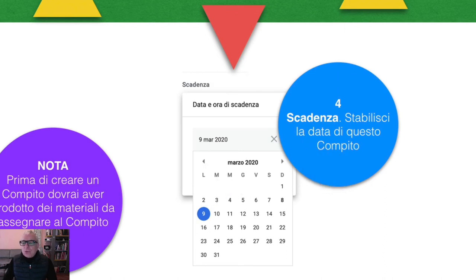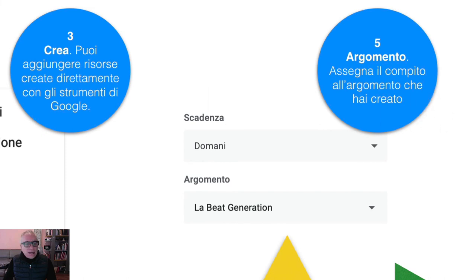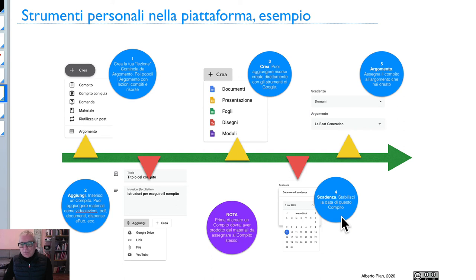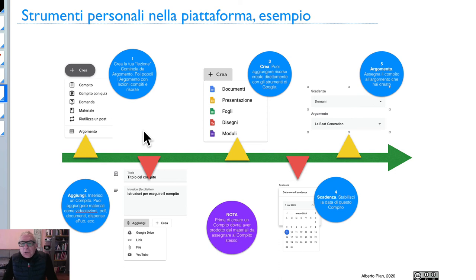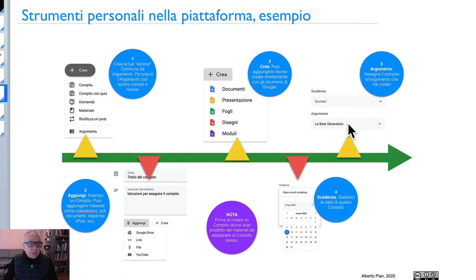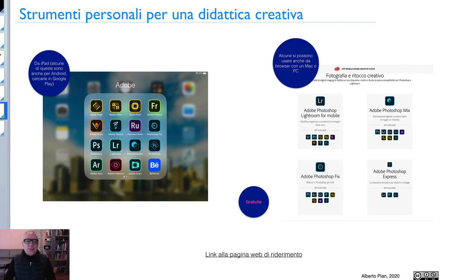Punto numero cinque: assegni il compito all'argomento che hai creato. Il giochetto è questo: create l'argomento, poi ritornate nella sezione di creazione compiti, fate le procedure per allegare le risorse e creare il compito, e poi dite: «A quale argomento appartiene questo compito?» Gli argomenti li dovete creare prima. Potete anche crearli tutti in anticipo se sapete già cosa fare nei prossimi mesi, e poi via via assegnare ogni compito a un determinato argomento.